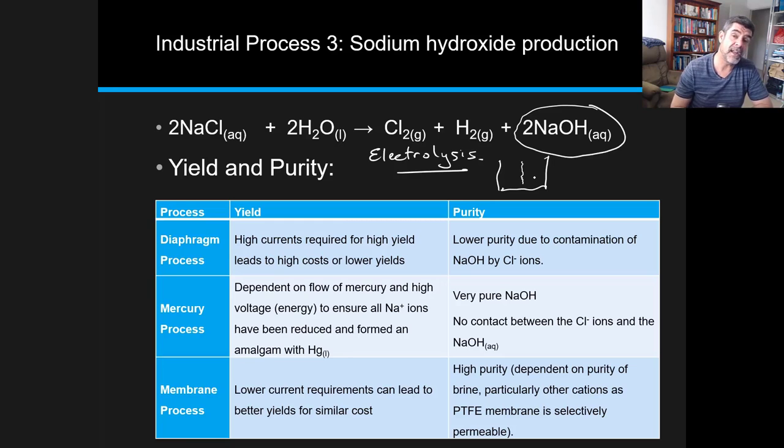Three processes have been identified as being particularly important to this type of process, and we've changed them over time for a number of different reasons, not all of which are associated with yield and purity, but they do give us an idea of the sorts of things that we can discuss when we're thinking about this.